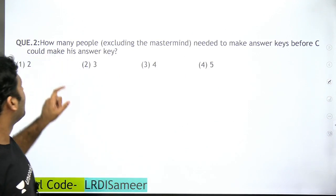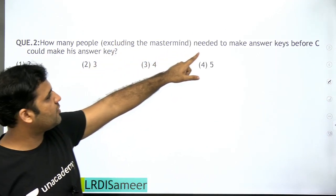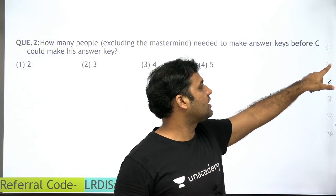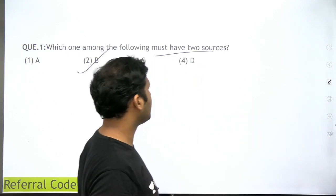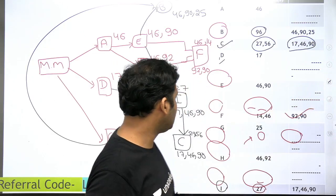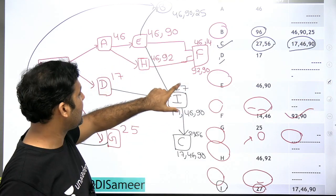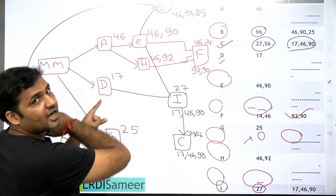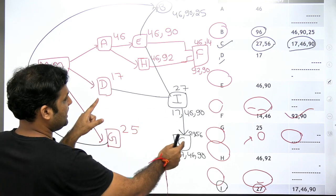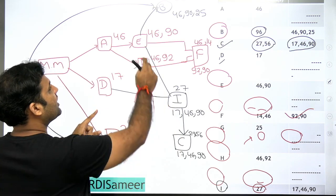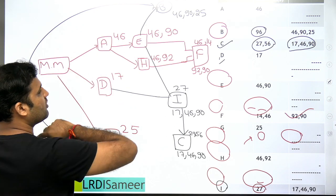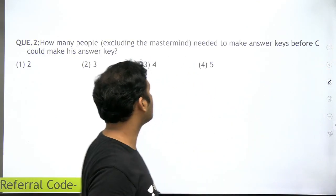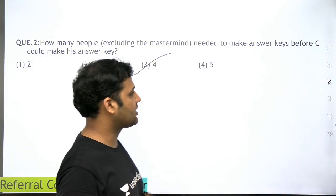Next question: how many people, excluding the mastermind, need to make their answer key before C could make his answer key? Look at the graph. For C to make his answer key, I must make his first. For I to make his, E and D must make theirs. And for E to make her answer key, A must make his first. So before C: I, E, D, and A must all make their answer keys — that is four persons.